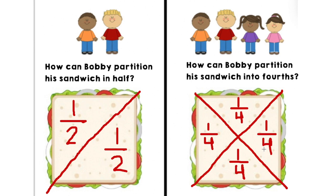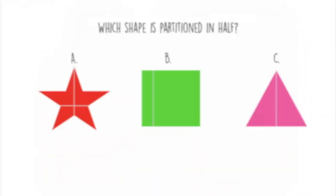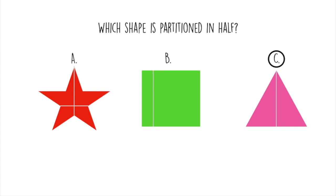Wow, rock stars, thank you so much for your help. Now it's time to stop and think: which shape is partitioned in half? The answer is C. Remember, when determining if a shape is partitioned in half you have to make sure there are two equal parts. A has four unequal parts, B has two unequal parts, yet C has two equal parts, so C is partitioned in half.